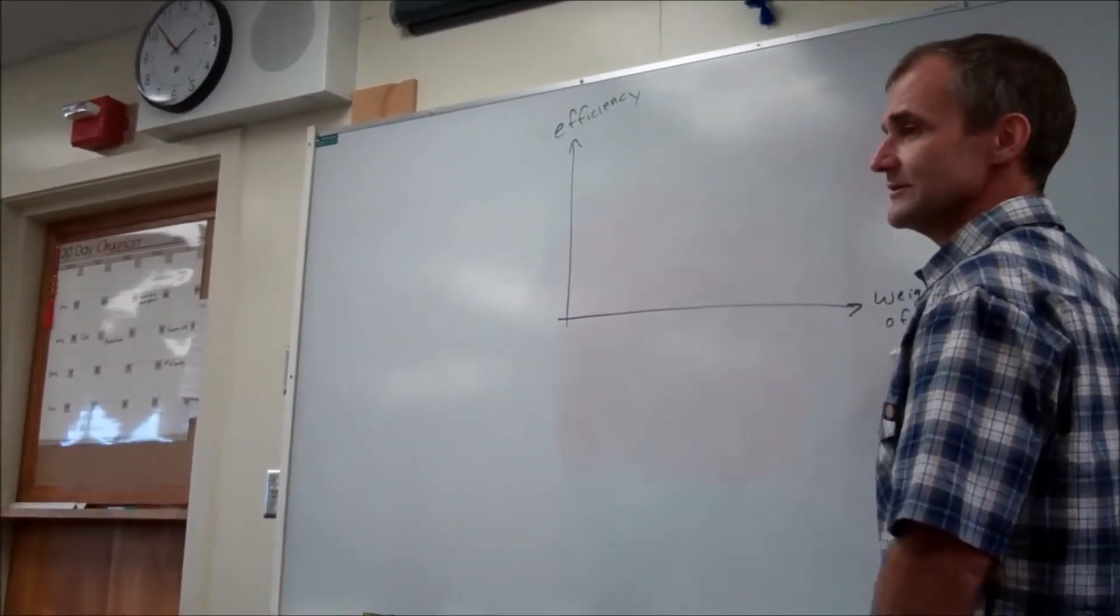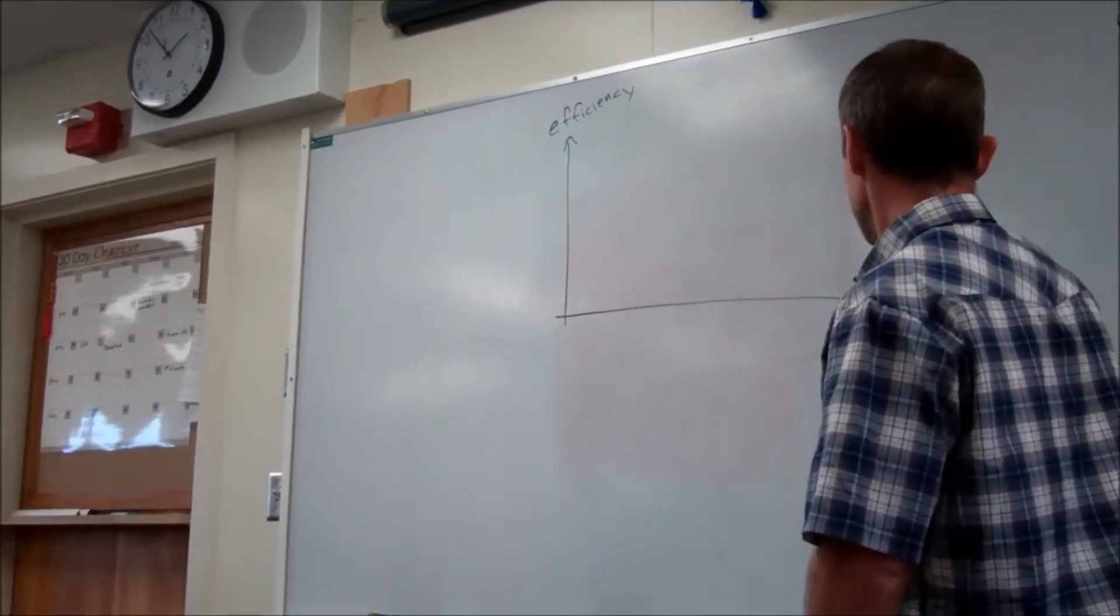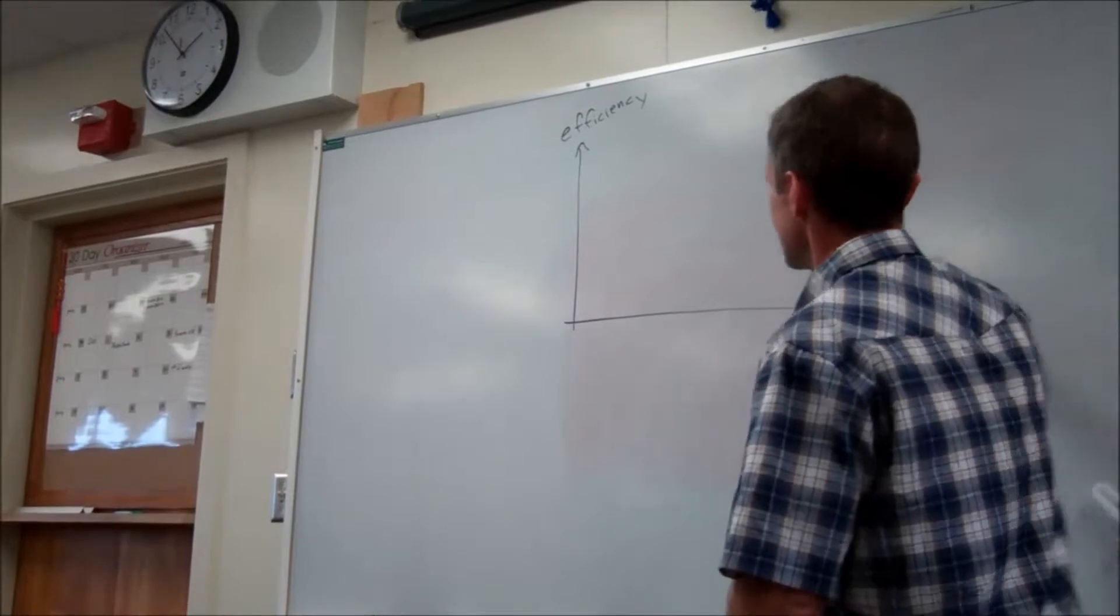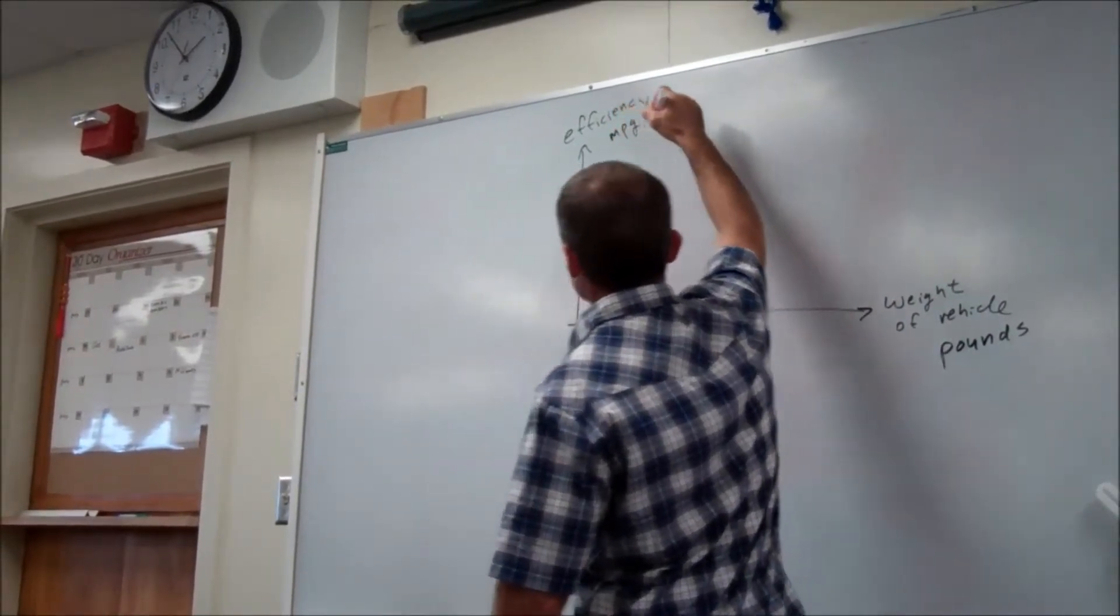What is this then? What are your units here? Pounds. Pounds? And what are your units here? Miles per gallon. Okay, so then what's the graph?